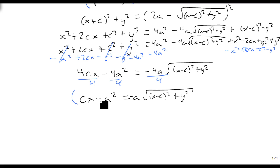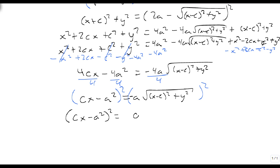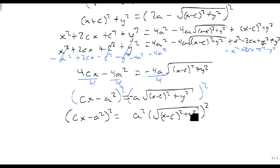Now we square both sides again. This gives us (cx − a²)² equals a² times [(x − c)² + y²], since squaring the negative removes it, squaring a gives a², and squaring the square root removes the radical, leaving just (x − c)² + y².